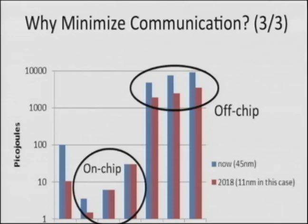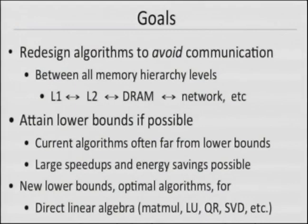The goals of this research agenda: redesign all algorithms to avoid communication in all senses — between all levels of memory hierarchy, L1, L2 cache, L2 and DRAM, networks and so forth. And whenever possible, prove lower bounds and prove that our new algorithms attain the lower bounds. We'll see that gives very large speedups and energy savings.